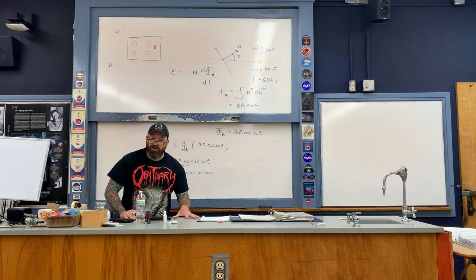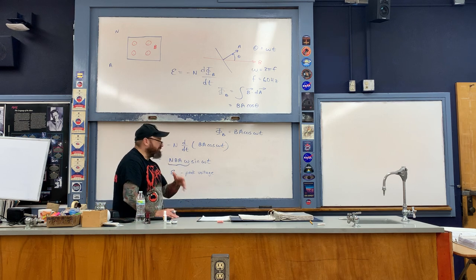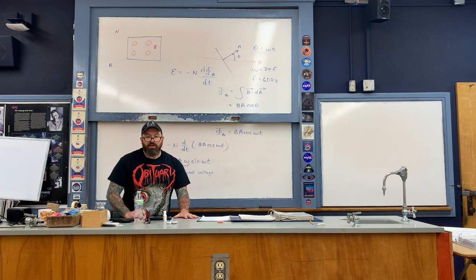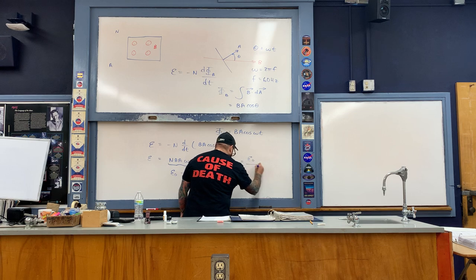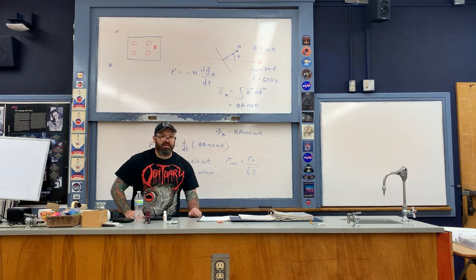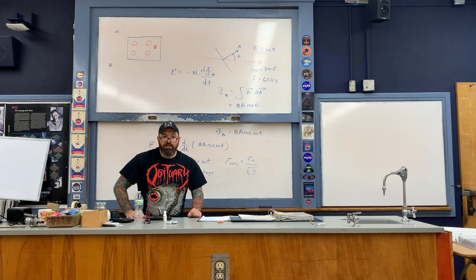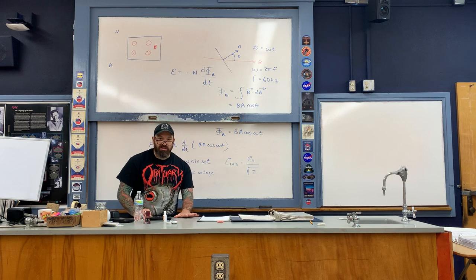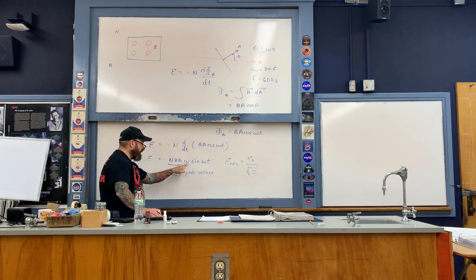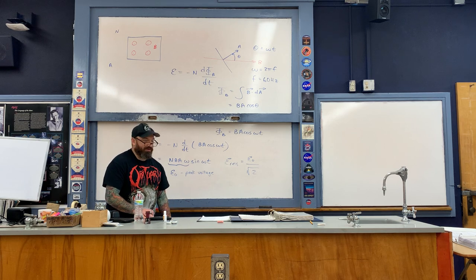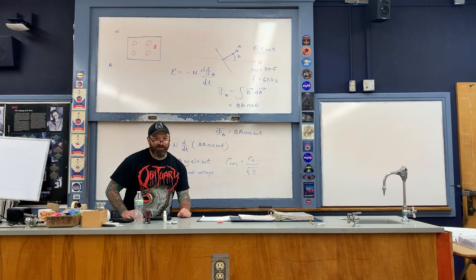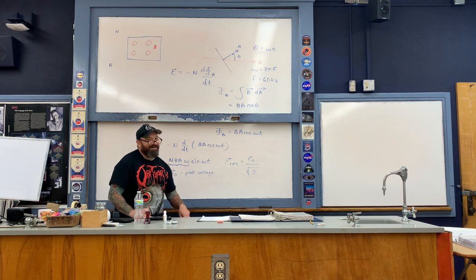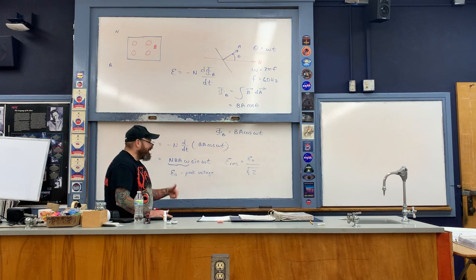The quantity NBAω in front of the sine is the peak voltage, called ε₀. The RMS voltage is this peak value divided by root two — that's the root mean square voltage. The easiest way to remember the peak voltage formula: think 'NBA times omega' — N·B·A·ω. Whether you think of it as men's or women's basketball, it's just an easy mnemonic for this peak voltage term.